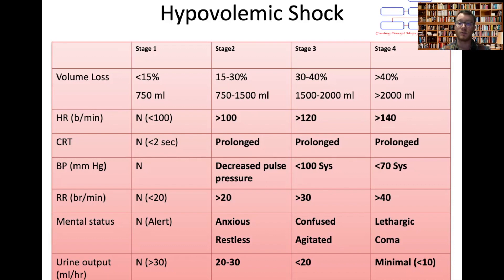Stage four — losing over two litres of blood volume — is where all parameters have deteriorated. The patient is severely hypotensive, tachypnoeic, and tachycardic, with a reduced GCS and minimal urine output. These patients urgently require blood transfusion.